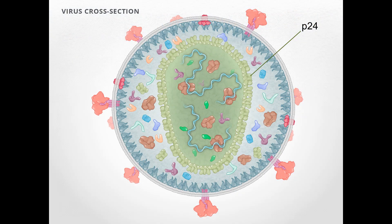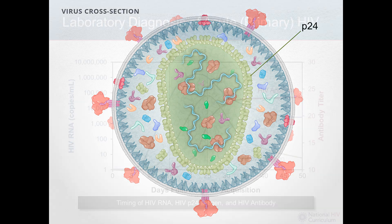To remind everybody: the P24 antigen is the protein that forms the viral shell of the capsid — essentially the core of the virus, where much of the key internal proteins and RNA of the virus reside. The P24 antigen is just the protein that lines this core. It is an abundant protein in HIV, which is one of the reasons it is chosen as a common assay target.